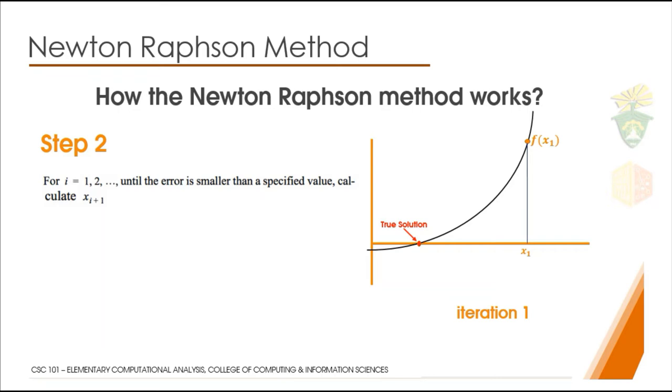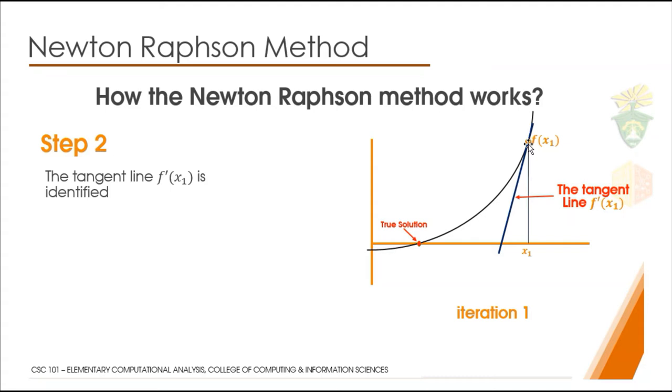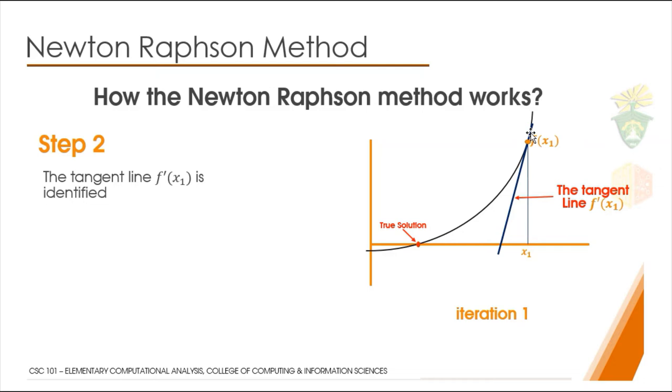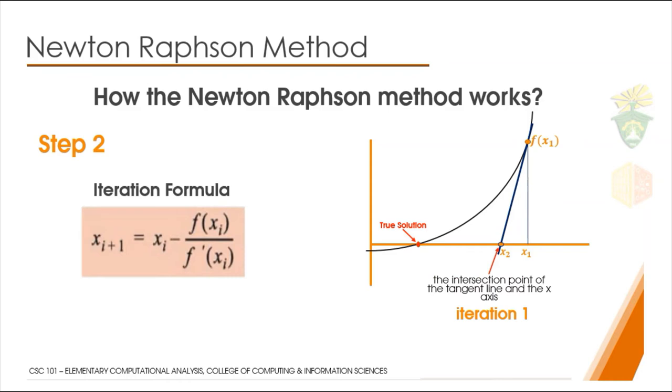The next step is to find the tangent line at the point f(x₁). The tangent line is used to get the next value of x. I'm assuming you know the meaning of tangent line from calculus. Basically, it's a line that passes through just one point from the function. We use the tangent line to get the next x. That is, where this tangent line crosses the x-axis, that point where it crosses the x-axis, which in this example is x₂, is the next x.